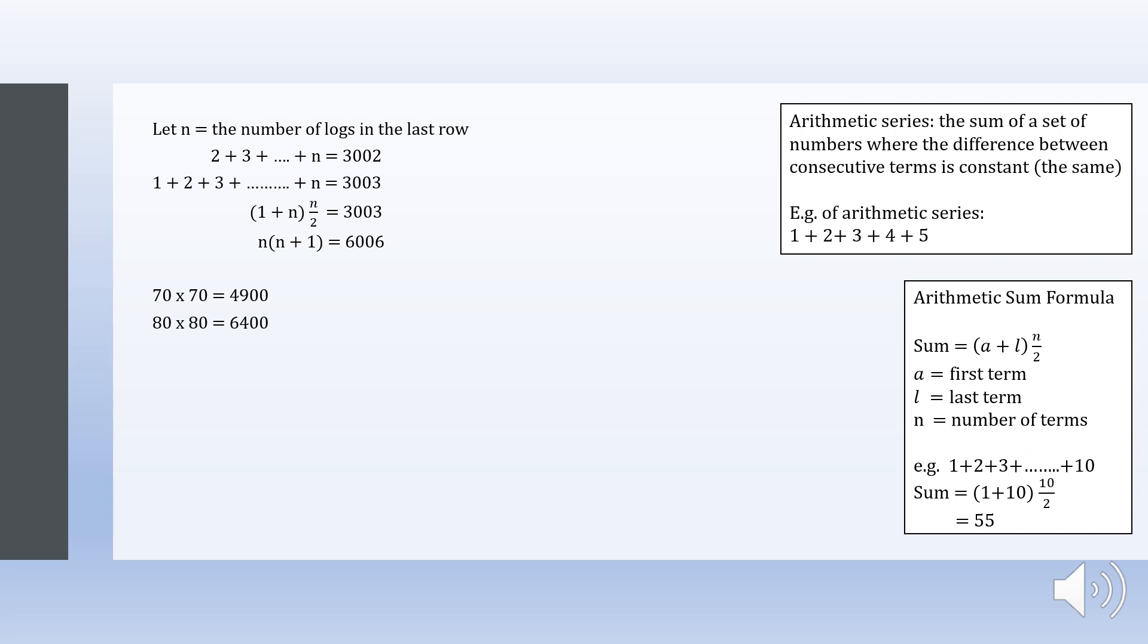So we have to think of what two consecutive numbers multiply to give a result that ends in 6. 2 times 3 and 7 times 8 both give a result that ends in 6, so we have to test both. 72 times 73 is 5256, which is too small.